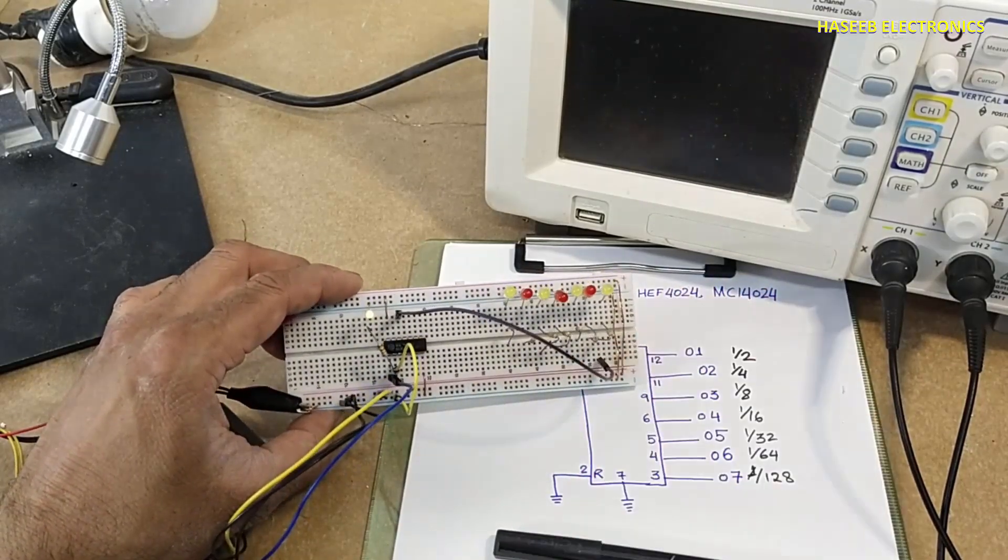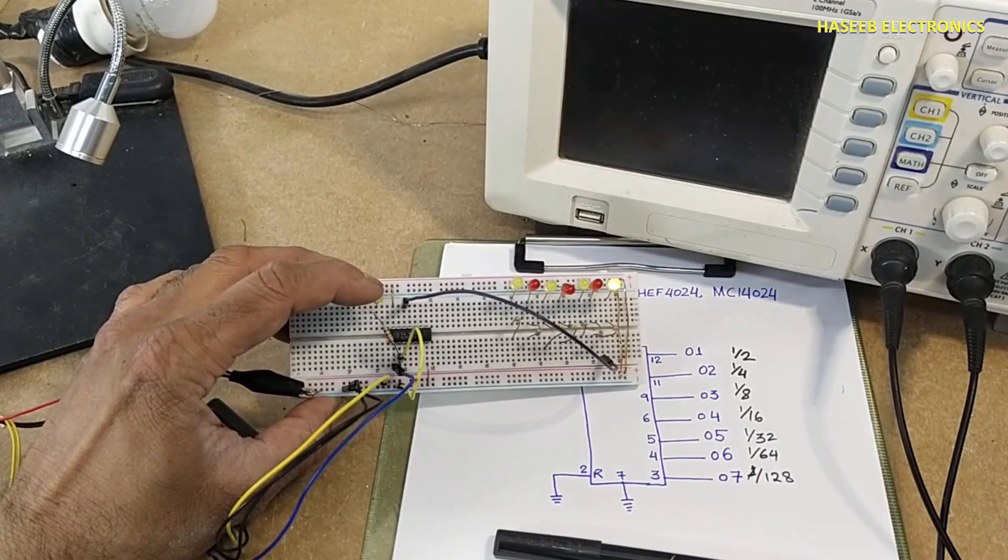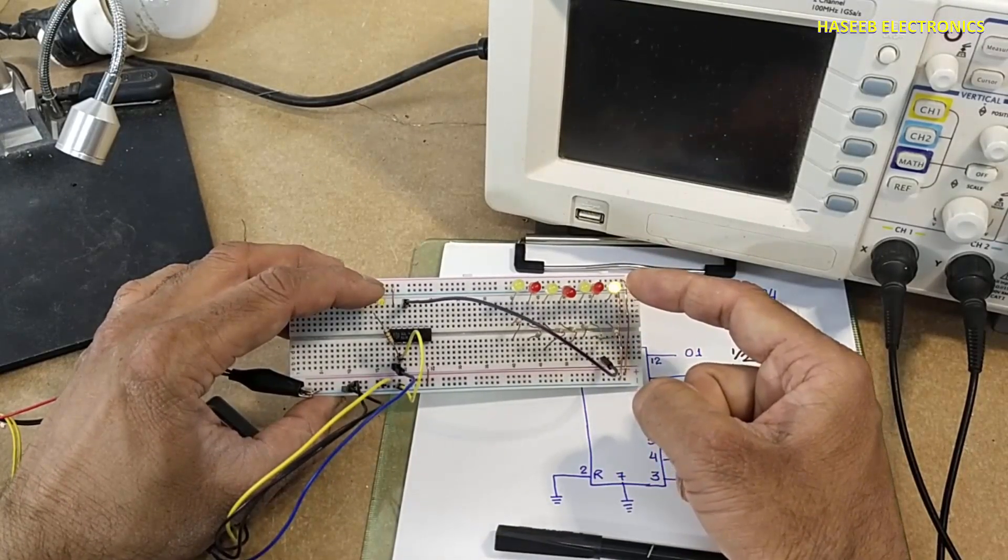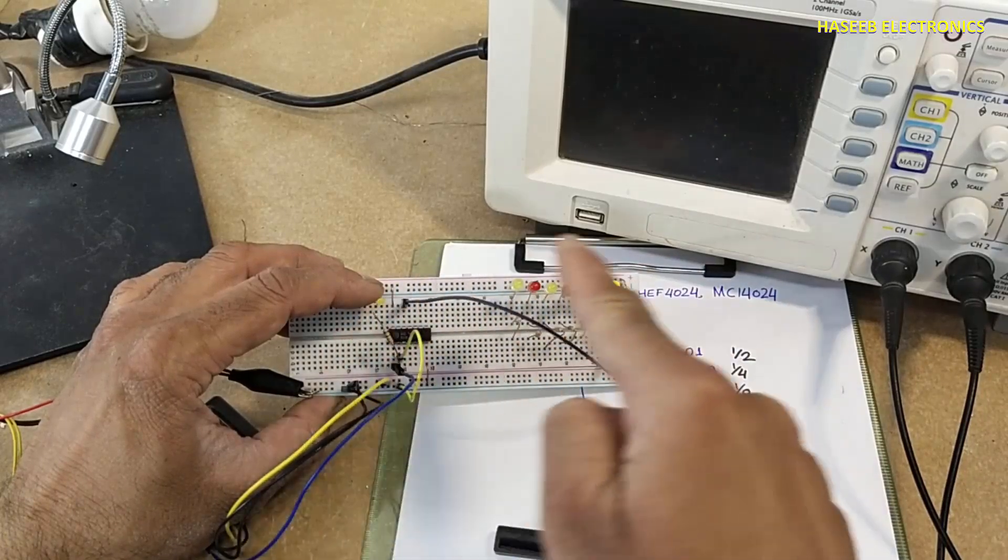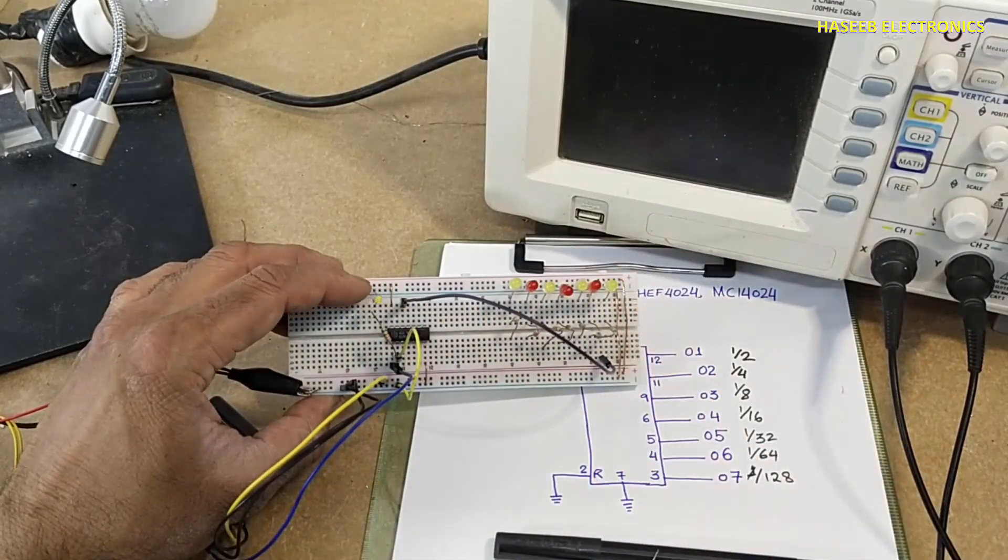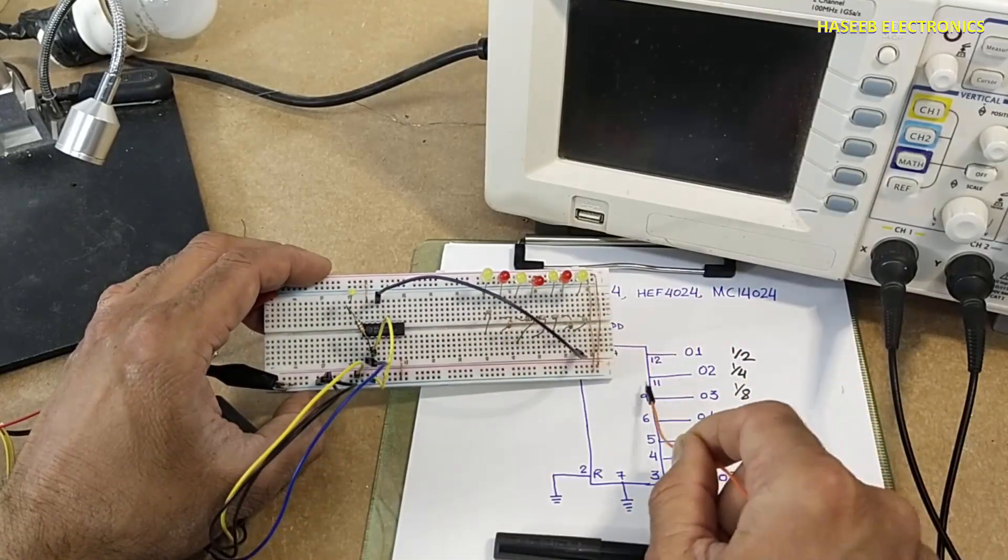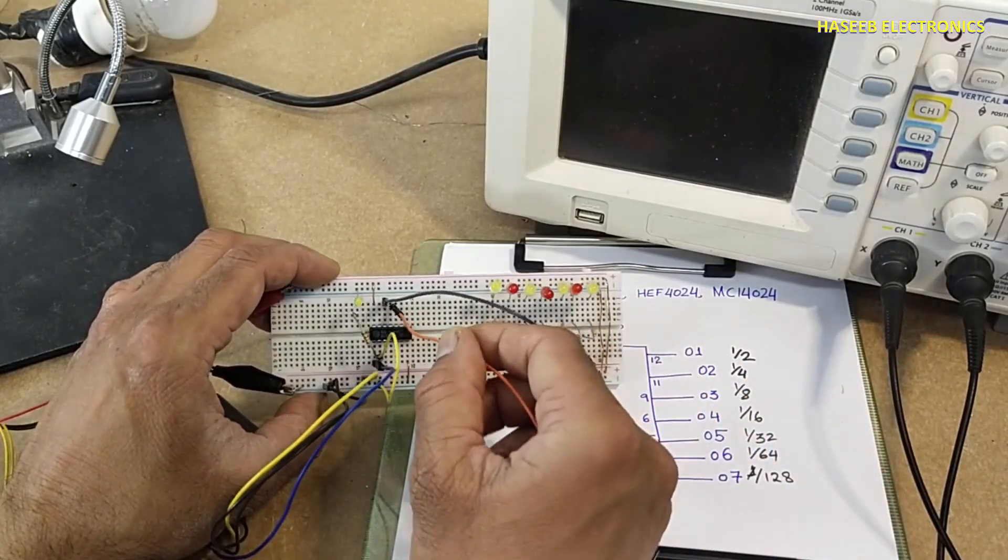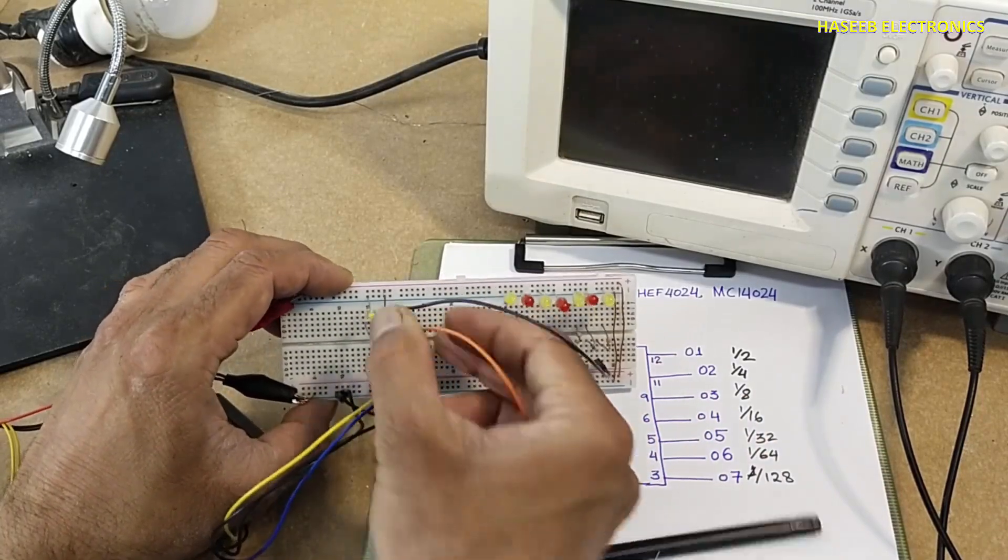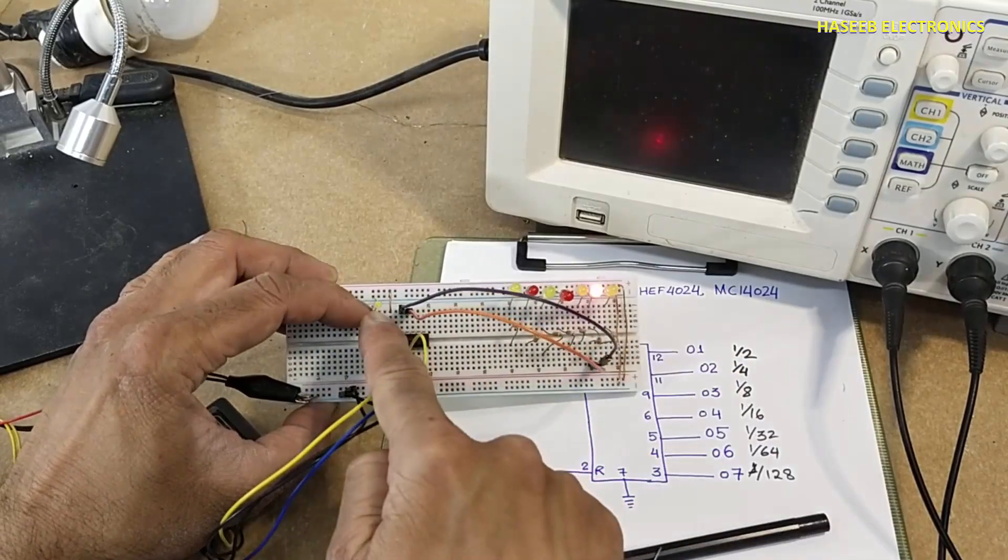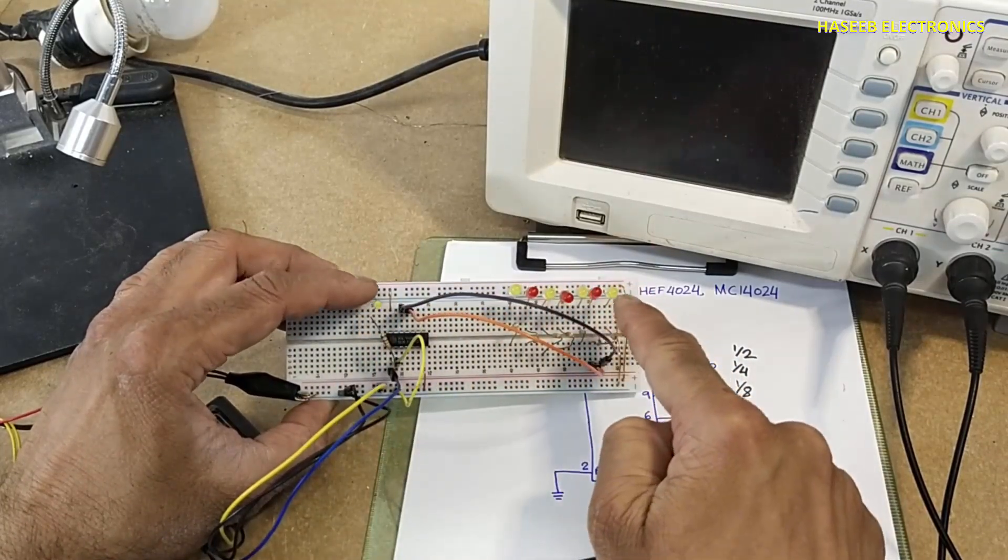This is first output. This blinks two times, then this will blink one time. That means it is dividing the frequency here by 2. Then output number 2 at pin number 11. So it will count these clock signals, these ripples in binary coded format.